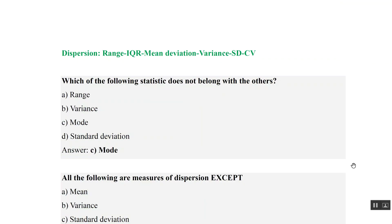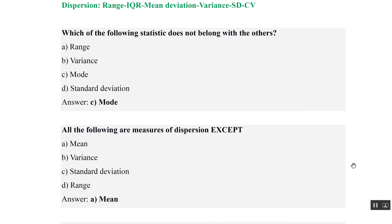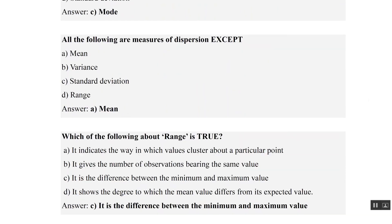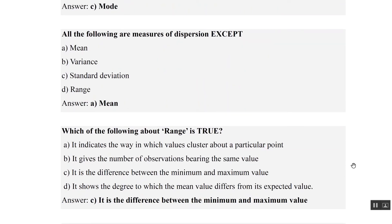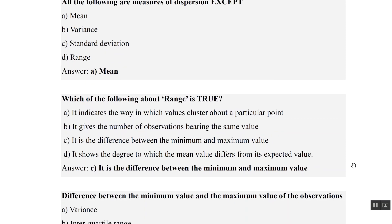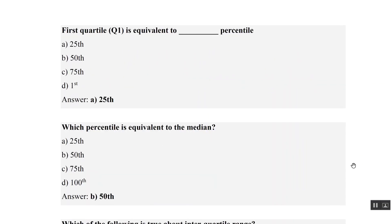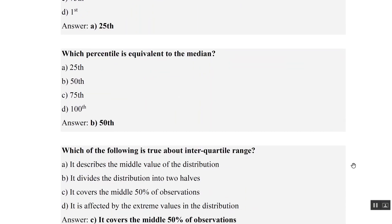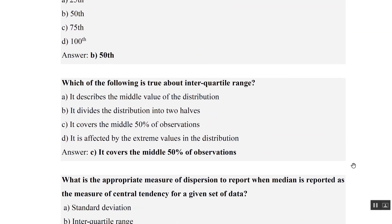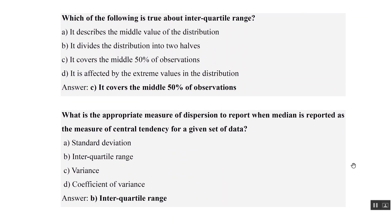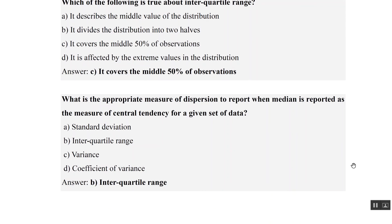Practice question: which statistic does not belong with the others? Range, variance, and standard deviation are dispersion measures — mode is central tendency. Range is a measure of dispersion: true, it indicates the difference between minimum and maximum value. First quartile is equivalent to 25 percent; median is equivalent to 50 percent. IQR covers the middle 50 percent of observations. The appropriate measure of dispersion when median is the central tendency is IQR.